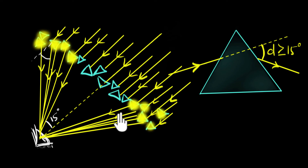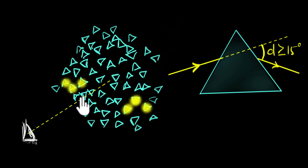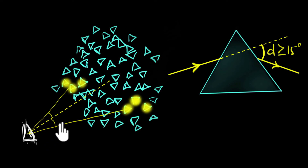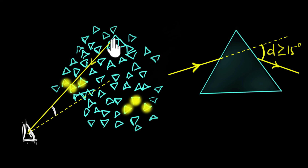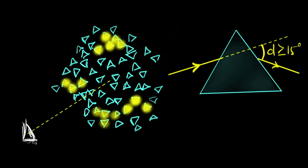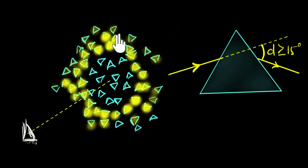So far so good — the hard part is done, but this was in 2D. Our world is in 3D. In 3D, the same logic applies in all directions: above, below, and to the sides. In any direction, as long as the angle is more than 15 degrees, those prisms will glow; the ones inside 15 degrees won't glow. When you put all those glowing prisms together, you end up with a circle.